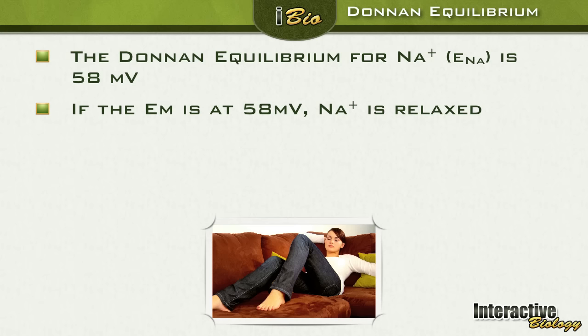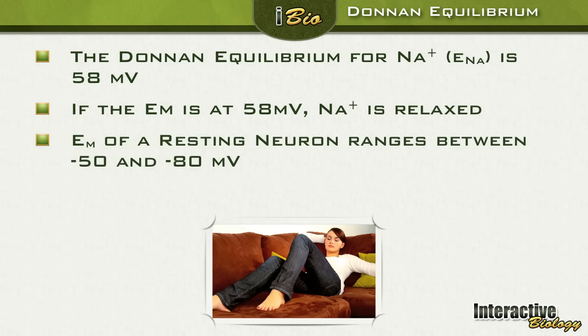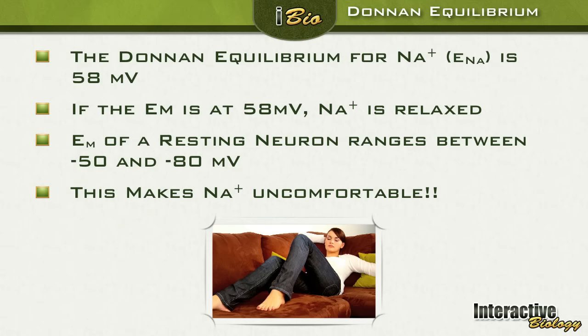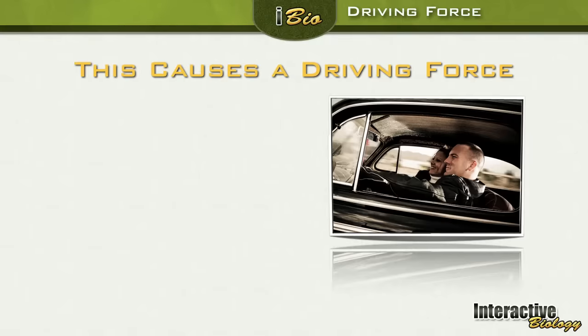It's like this lady here relaxing on the couch after a long day of work. However, the membrane potential of a resting neuron ranges anywhere between negative 50 and negative 80 millivolts. Now is that anywhere close to the equilibrium potential for sodium ion? Not at all. And what is this going to do? This is going to make sodium ion extremely uncomfortable — this is the long day of work and the stress and all that stuff. It wants to be relaxed, it wants to be at equilibrium, but it can't be. So what is this going to do? It's going to cause a driving force.